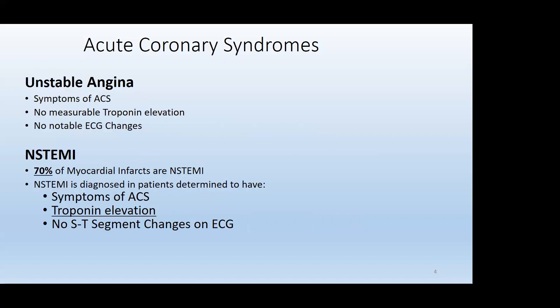Breaking down the terminology for acute coronary syndromes — unstable angina: these patients will have symptoms such as shortness of breath, chest pain, tightness, radiating pain, back pain, abdominal pain. But when we take them to the hospital, they're not going to have a measurable troponin at the ER even after four hours on the repeat troponin, and they won't have any pre-hospital or in-hospital ECG changes. So they get the diagnosis of unstable angina.